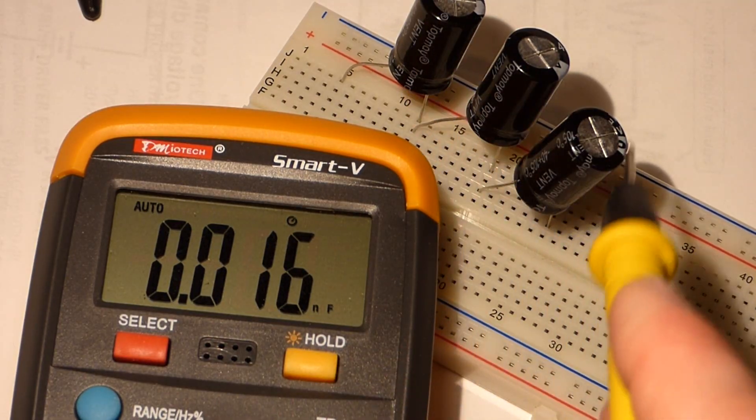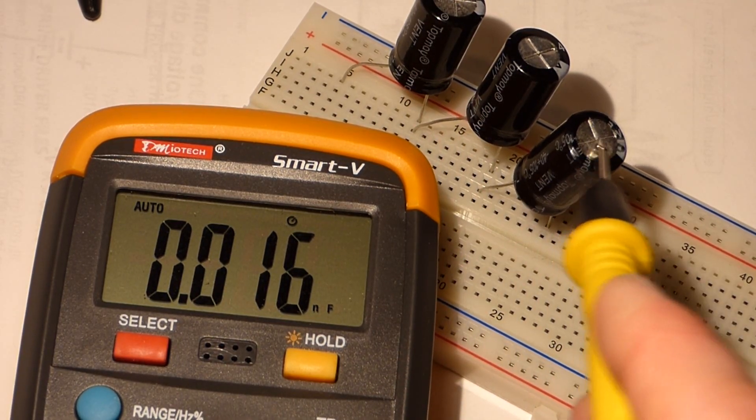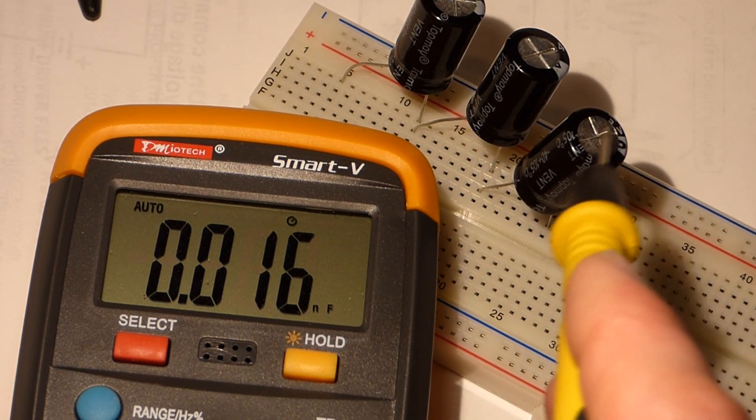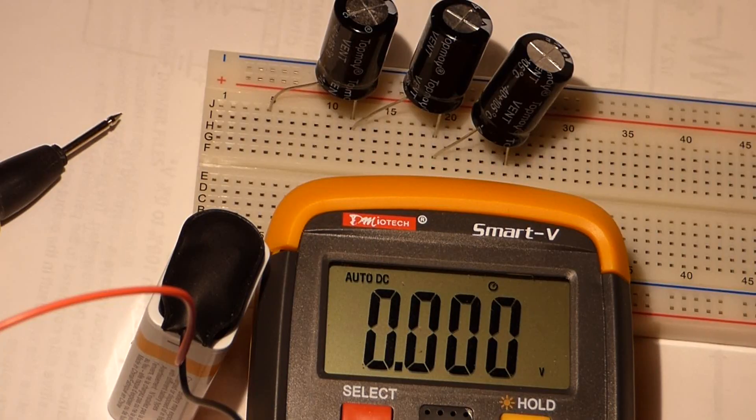It drops down to about a third of one of these. So as you keep adding them in series, the capacitance goes down. And if they're equal value, it's really easy. It's just a fraction of one of them by themselves.